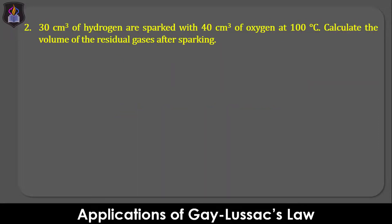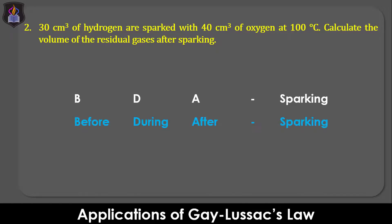Question two: 30 cm³ of hydrogen are sparked with 40 cm³ of oxygen at 100 degrees Celsius. Calculate the volume of the residual gases after sparking. We will approach this problem using what I call the BDA sparking concept — that is, before, during, and after sparking.